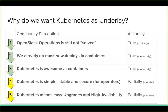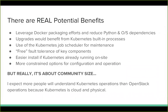The good news is this used to have some red in it, and we're significantly better than we were even six months ago. There are real benefits: Docker packaging does help people manage Python dependencies. We do get upgrades from Kubernetes's built-in process — you can issue a single command and change the Nova client on a hundred machines. There's job scheduler for maintenance, a whole bunch of infrastructure you get for free. You can get fault tolerance in key components because Kubernetes will make sure things keep running — I need you to keep running two copies of my database server. That's really impressive.